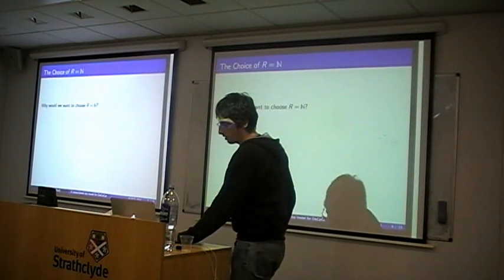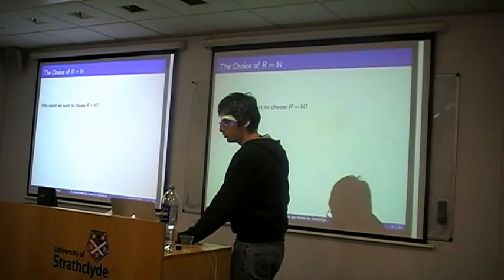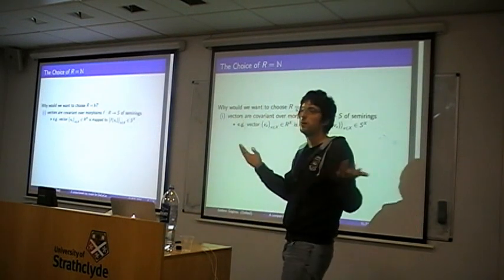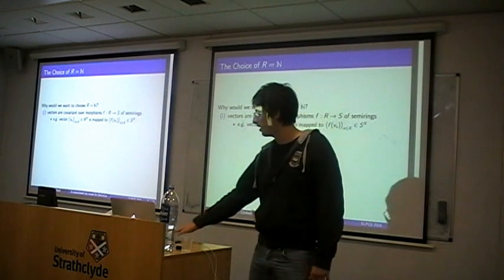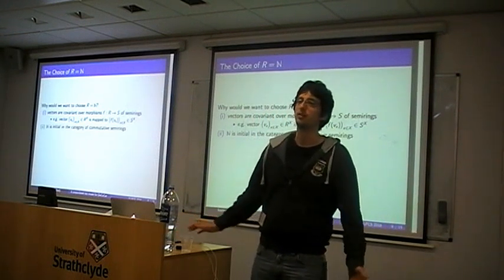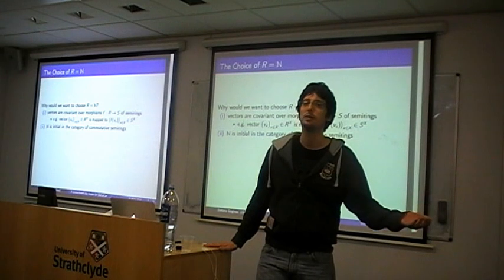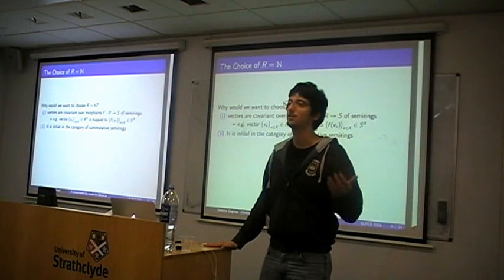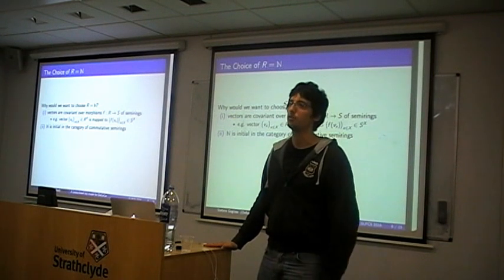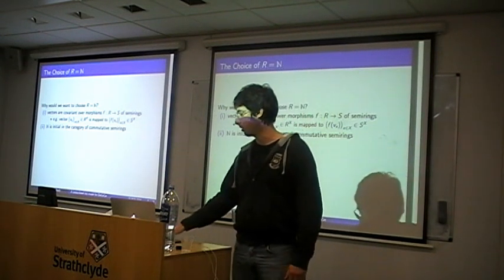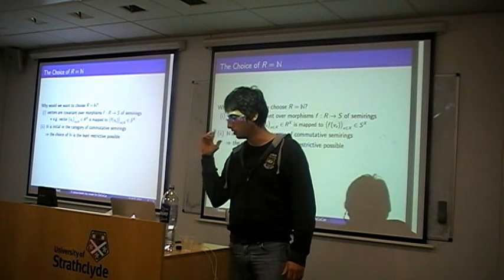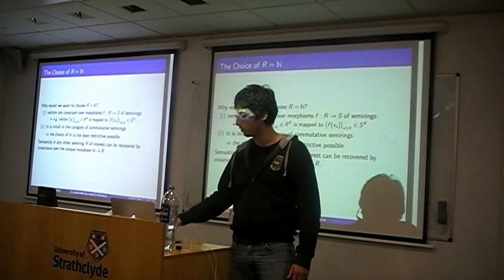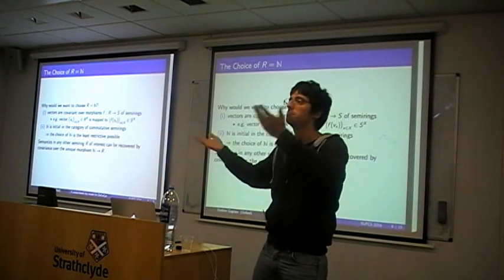Why might one want to choose the natural numbers? You can change semi-ring just by changing coordinates of your vectors, and it turns out that N is initial in the category of semi-rings. So there's always a unique map, and N is really the minimal thing you need to be able to count things. If you take semantics as counting seriously, that's your starting point. There's always a canonical way of turning this model into any other model — you can just count in N and then map to your desired semi-ring.